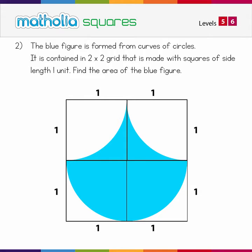The blue figure is formed from curves of circles. It is contained in a 2x2 grid that is made with squares of side length 1 unit. Find the area of the blue figure. There are a number of ways we can solve this problem — I'll show you two ways. The first way uses the equation for finding the area of circles, and the second way is like a shortcut by approaching the problem visually.